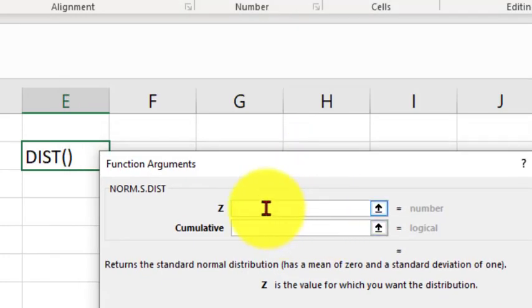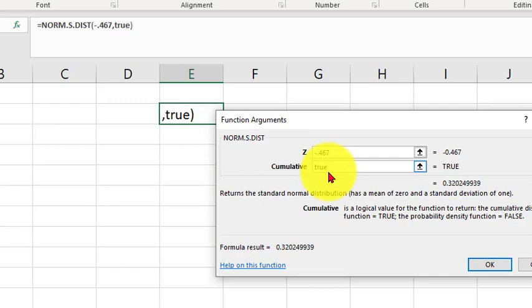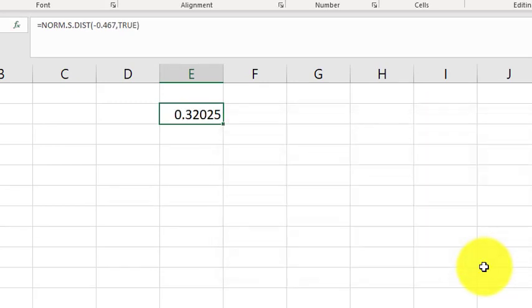My Z score is negative 0.467. Negative 0.467. And cumulative is always true for us. True. And we should get a p-value. And we do.